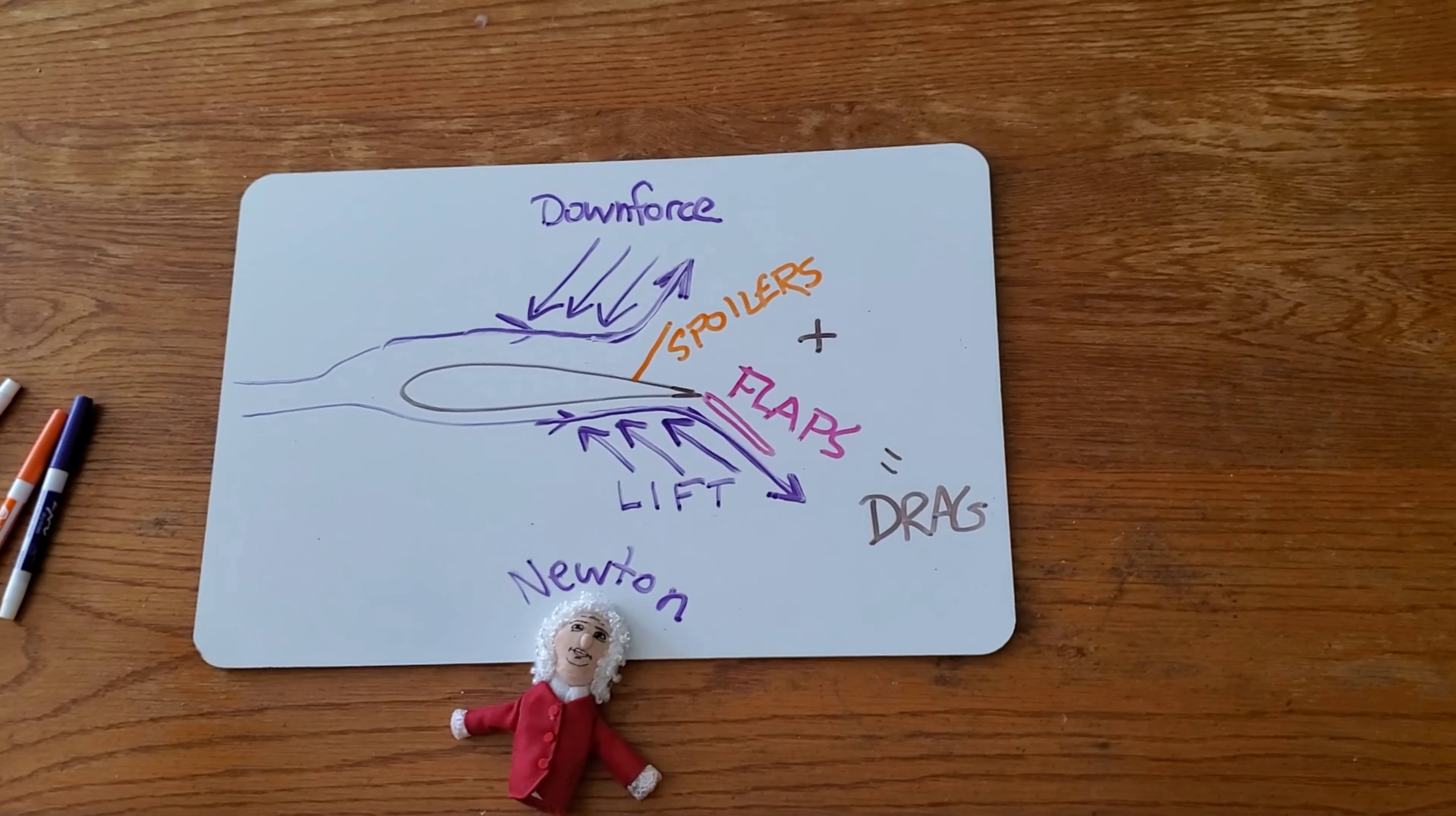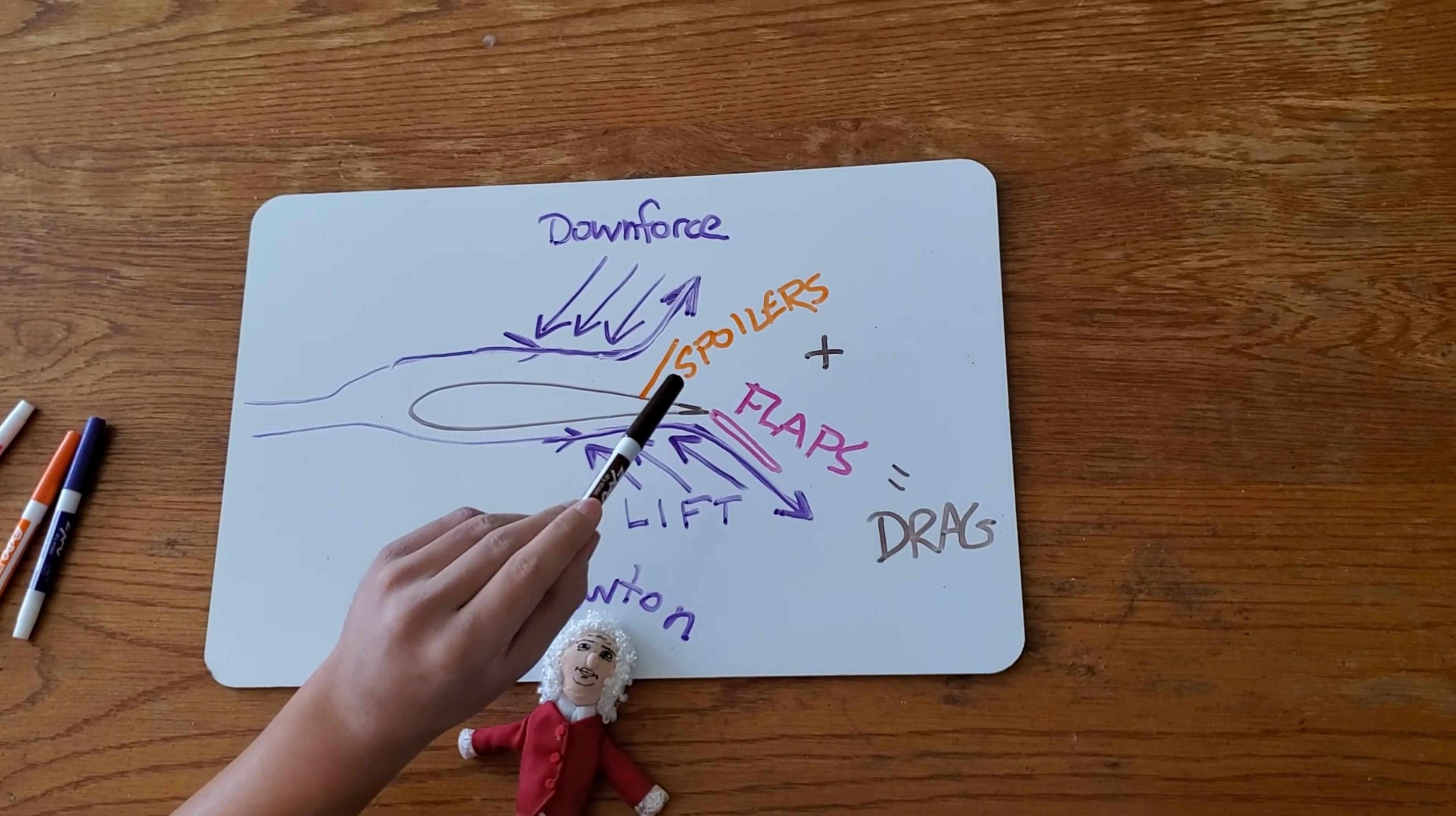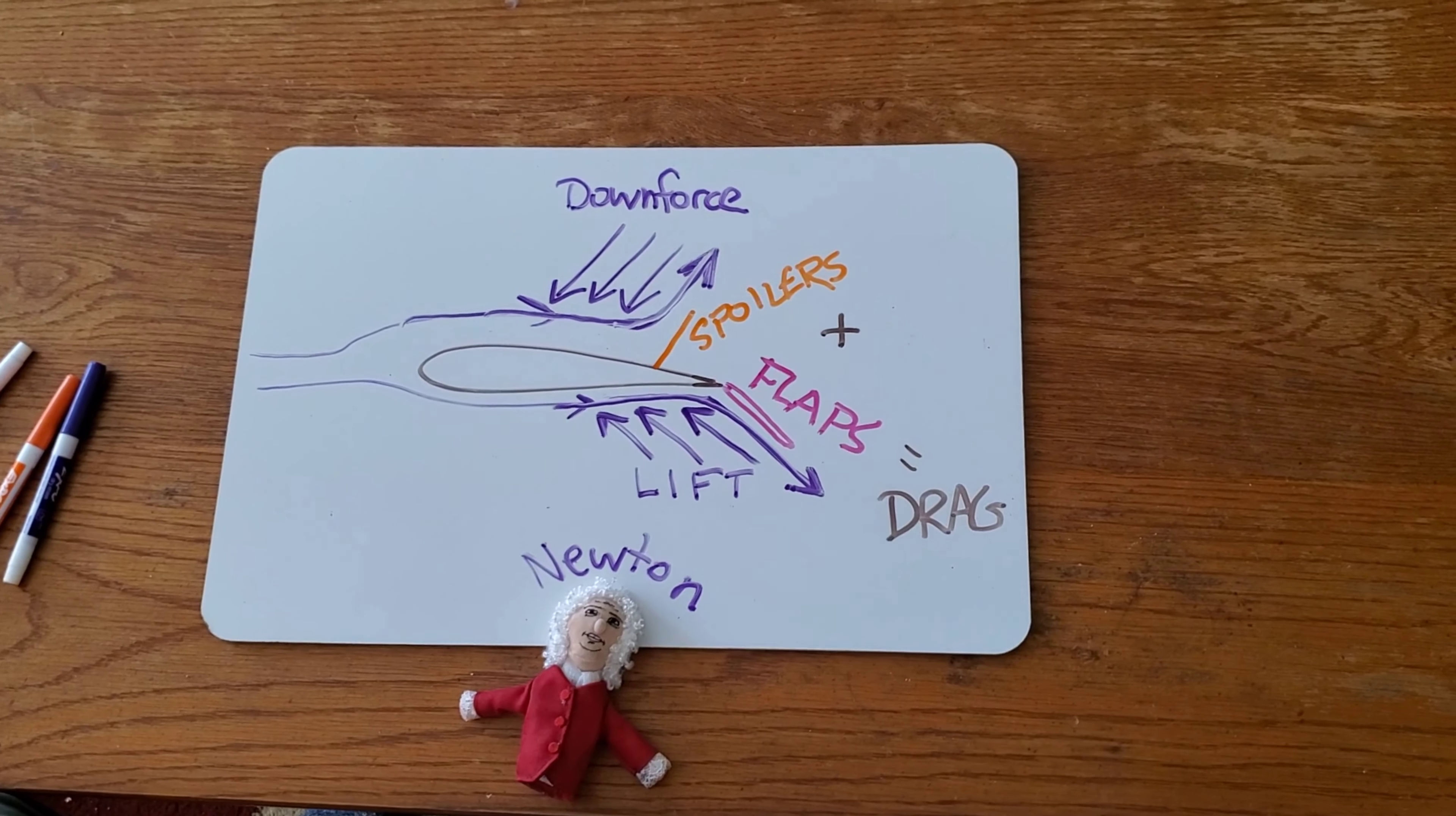But back to the wondering we had earlier. Flaps come down before the airplane hits the ground. Spoilers don't come up until the airplane's on the ground. Why might that be? Have you thought about it yet? Well, I hope so. Here comes the answer.